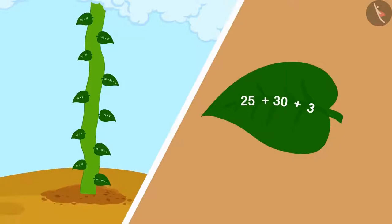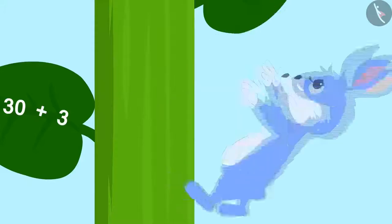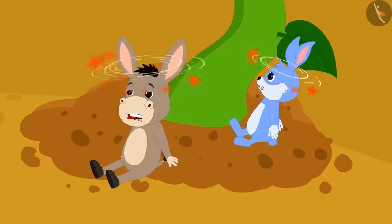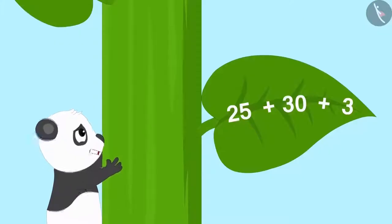A math puzzle was written on each of its leaves. Many people tried to climb the vine, but every time they slipped and fell down.